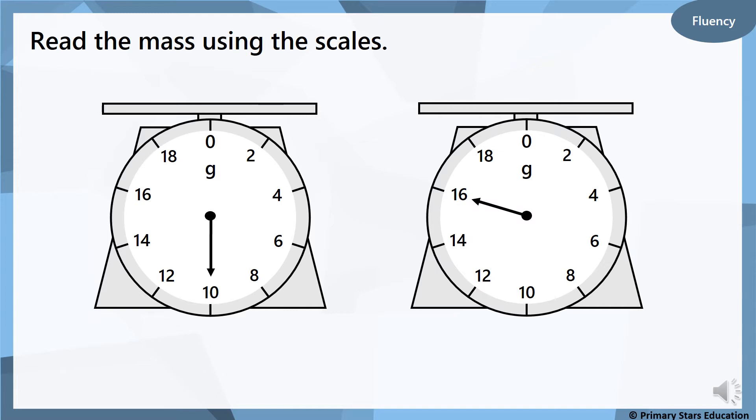So the mass is we're measuring how much something weighs. Have a look at the first scale there and you can see that the arrow is pointing to which number? You can call it out at home. It's pointing to the 10. And what is this measured in? Have a look at the letter that you can see at the top there. It's a G which means grams. 10 grams. That's quite straightforward, isn't it? It's pointing to the 10.